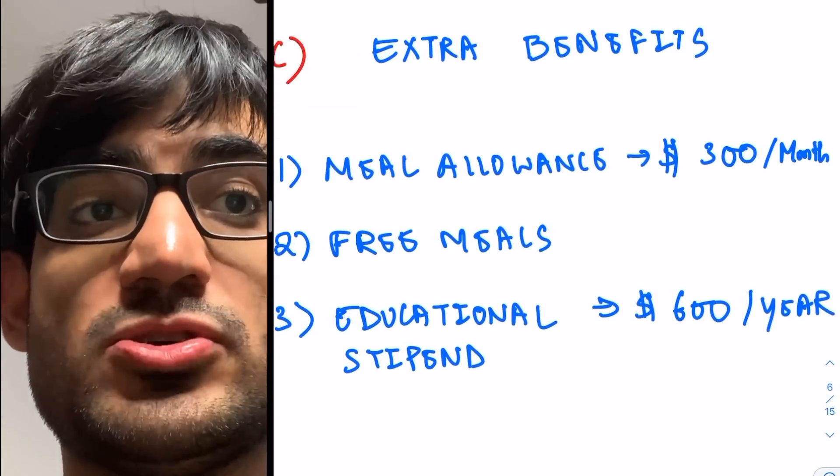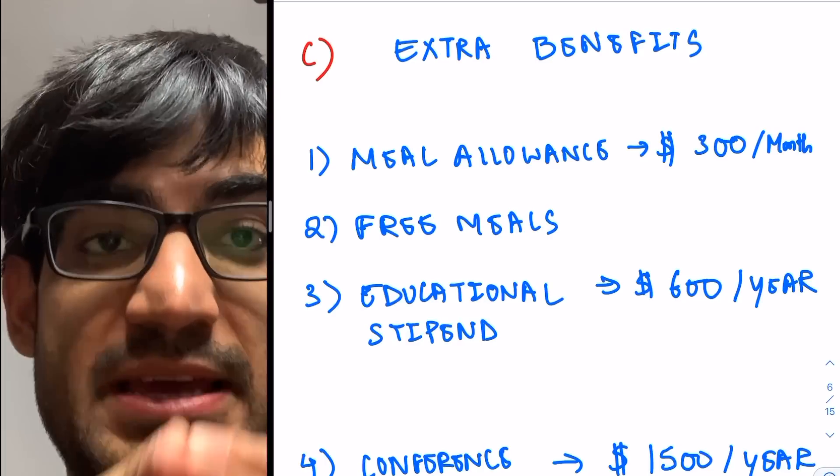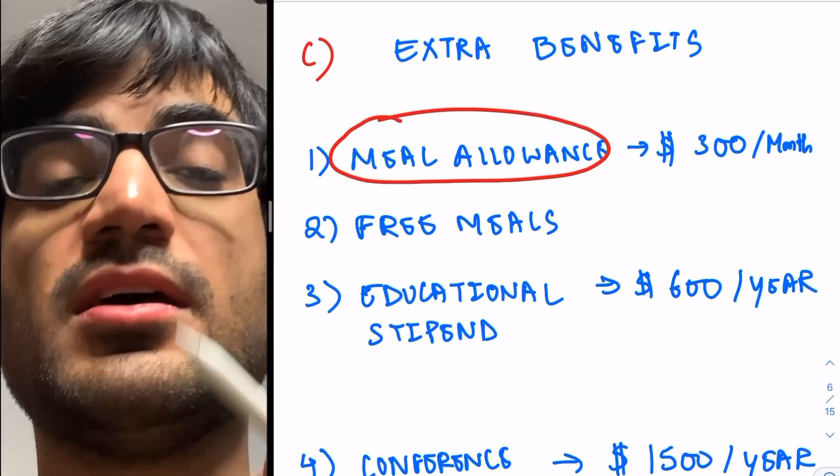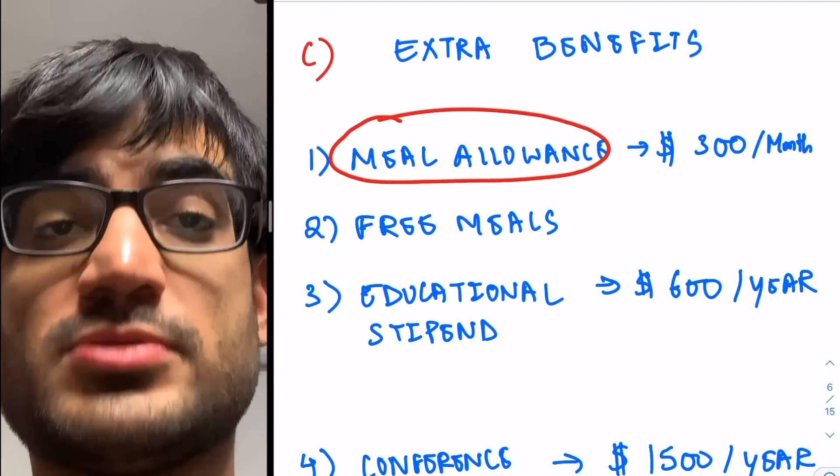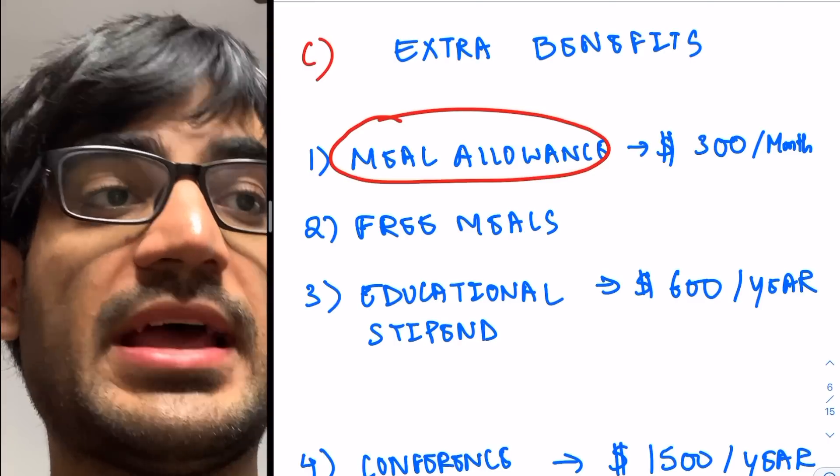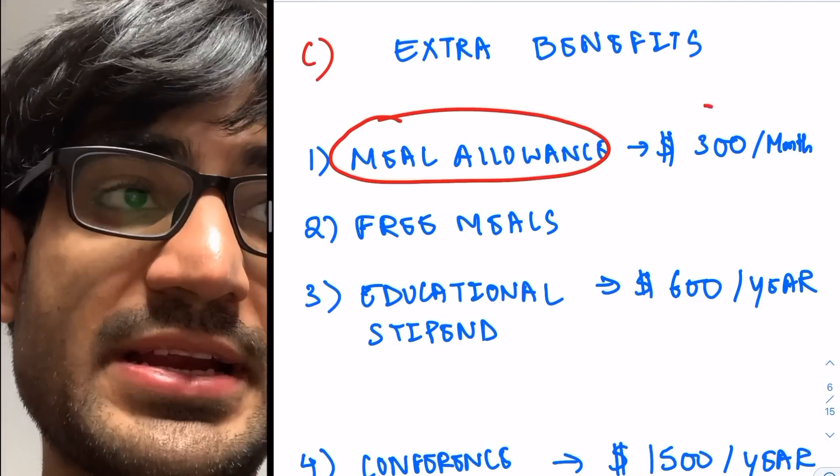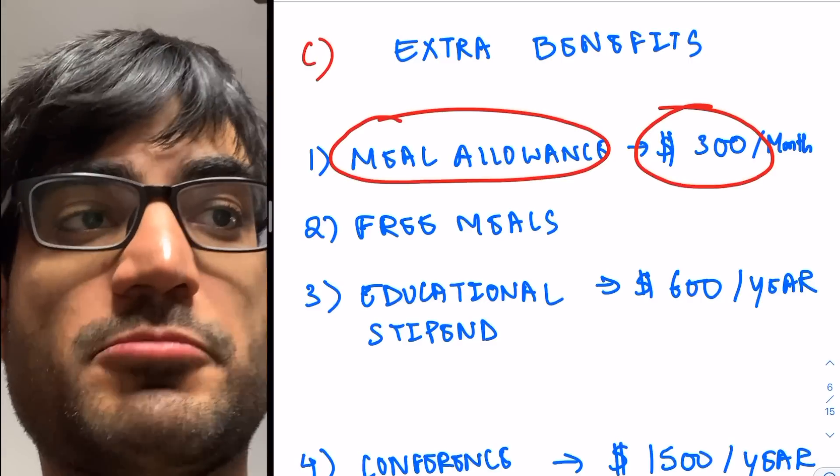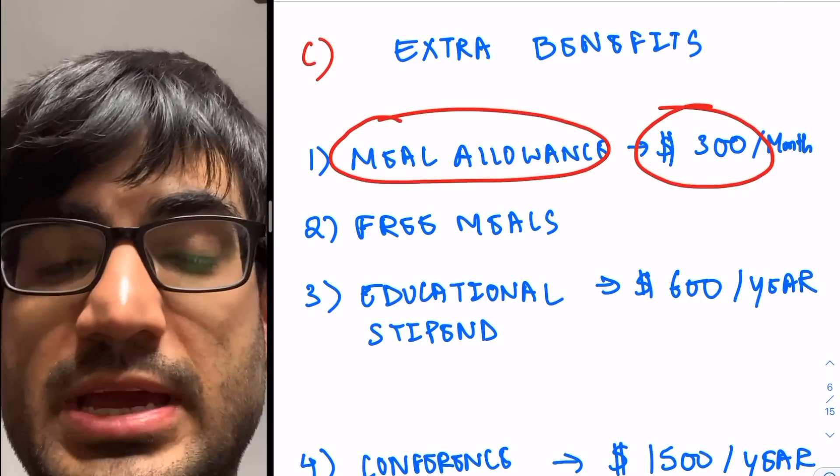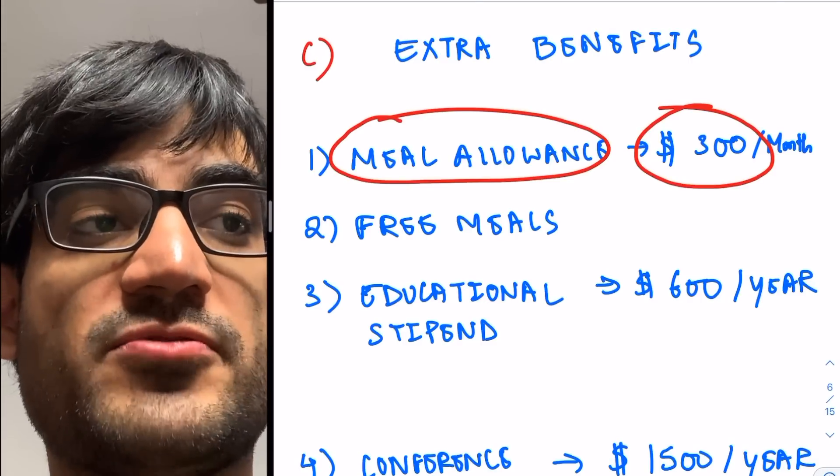What are the extra benefits you get? Every residency program gives a certain meal allowance to the residents per month so that you can buy food. And that is the maximum I've seen is about $300 per month, up to $300 per month.